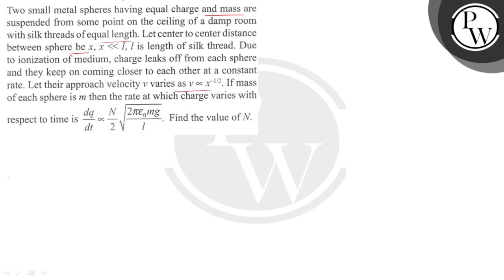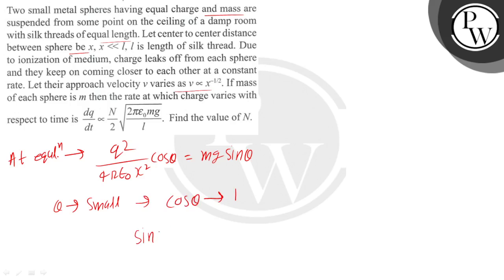So at equilibrium, Q²/(4πε₀x²) cosθ should be balanced with mg sinθ. And now I can write cosθ as 1 and sinθ as θ, using small angle approximation.